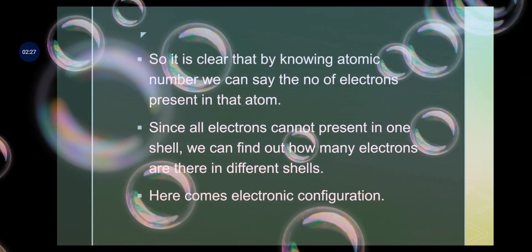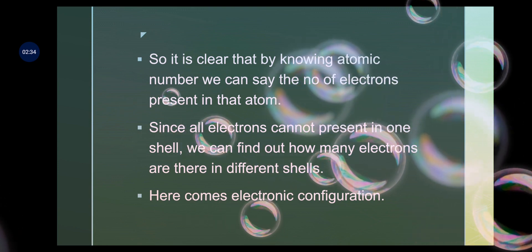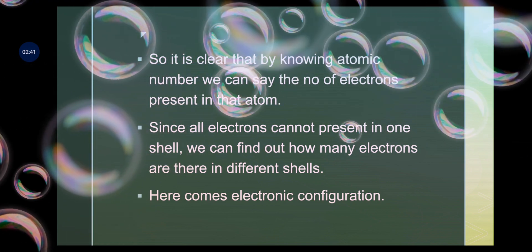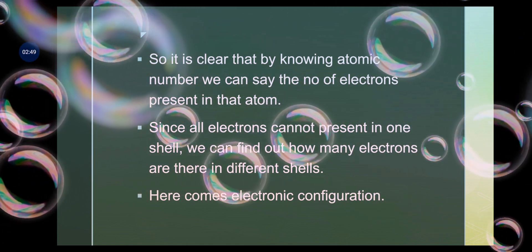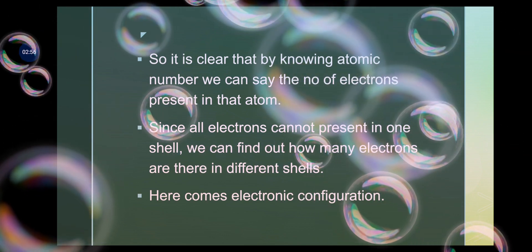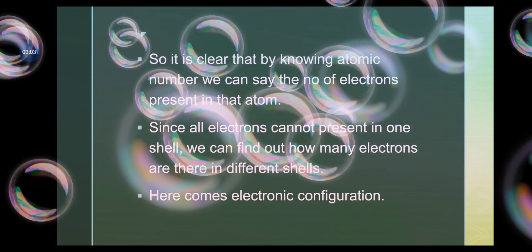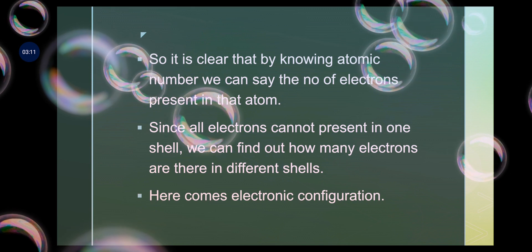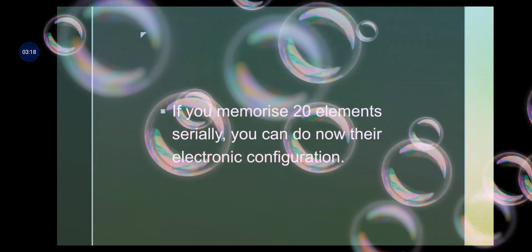Since all electrons cannot be present in one shell, we can find out how many electrons are in different shells — this is called electronic configuration. From the Bohr model and Rutherford model, we know that if an atom contains 15 protons and 15 electrons, all 15 electrons cannot reside in one place. They are placed in different shells surrounding the nucleus — K, L, M, N, etc. — each with a particular capacity. The last shell cannot hold more than eight electrons.